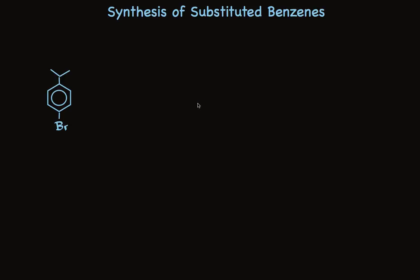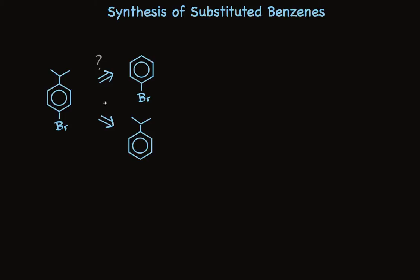Let's look at para-bromoisopropylbenzene. There are two substituents on the ring, so we can consider two possible precursors. We could consider putting the isopropyl group on using bromobenzene, or alternatively we could use isopropylbenzene and put bromine on. We need to put question marks here because at this point we're simply considering the possibilities. Now we need to consider the ortho-para and meta-directing effects of these substituents. Bromine directs to the ortho- and para-positions, so we could make what we want.